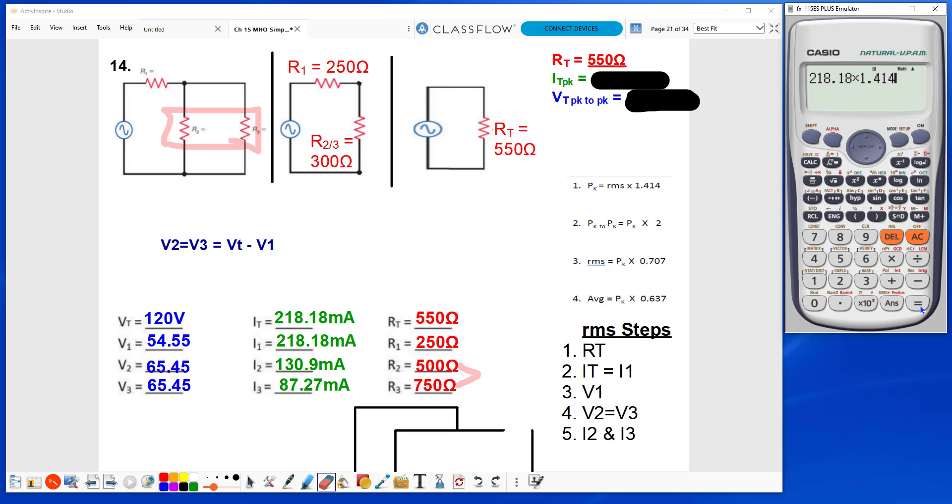going to be in milliamps, so I didn't put milliamps. It was not necessary to put milliamps in the calculator. And this gives me an IT peak of 308.51 milliamps.